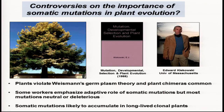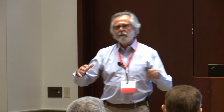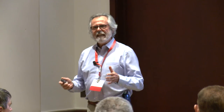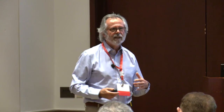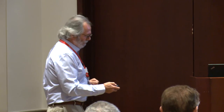With regard to somatic mutations, there have been two kinds of perspectives. One — quite controversial — is that this is an adaptive process, and by producing genetic mosaics, trees for example can be protected against herbivory because herbivores are confronted with a complex genetic mosaic. There's not really any good evidence for that. Since most somatic mutations are either neutral or deleterious, it's probably more sensible to focus on their harmful effects, which is what Klekowski did in his book.